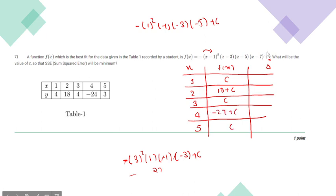So the delta will be c minus 4, 15 plus c minus 18, c minus 3, c minus 4, and it will become c minus 3.